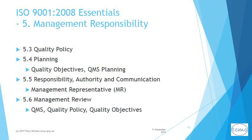Clause 5.3 lays out what the quality policy needs to cover in order to be an effective framework for the development of quality objectives for the organization. Quality objectives are then covered in clause 5.4 under planning. Clause 5.5 requires there to be clear assignment of roles, responsibilities, and clarity of authority. In particular, there needs to be someone assigned the role of management representative, commonly referred to as the MR.